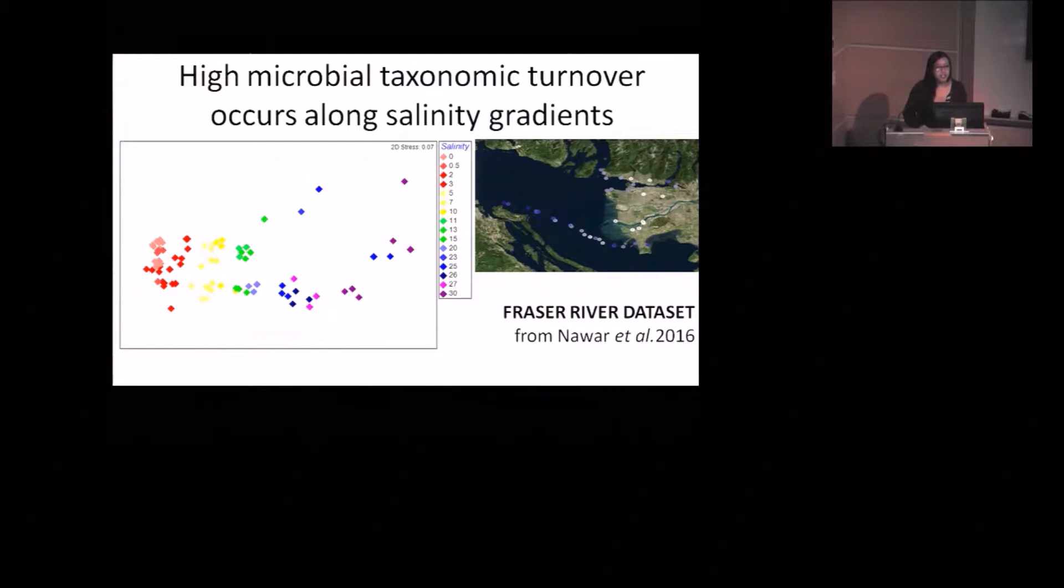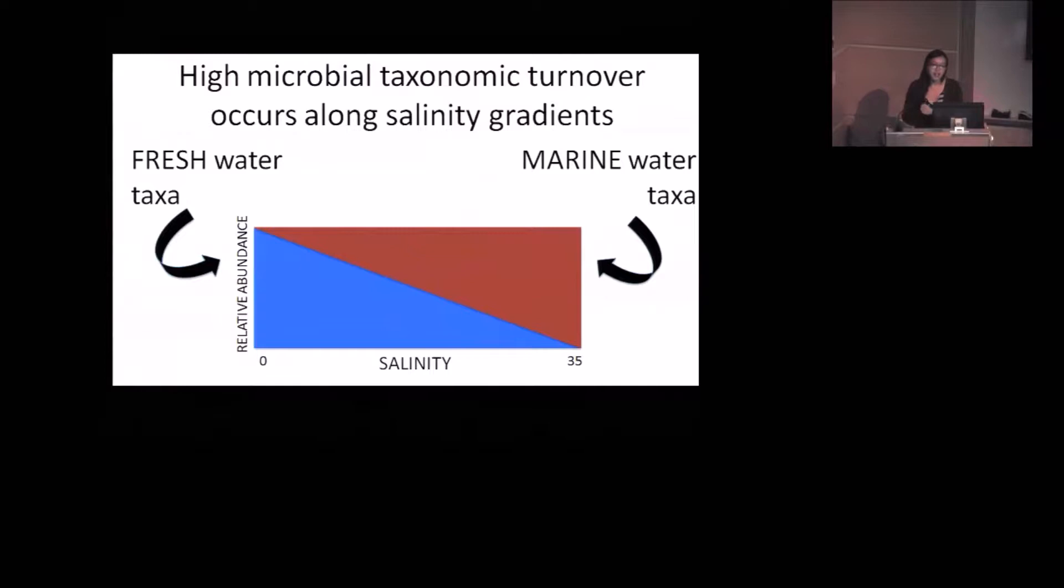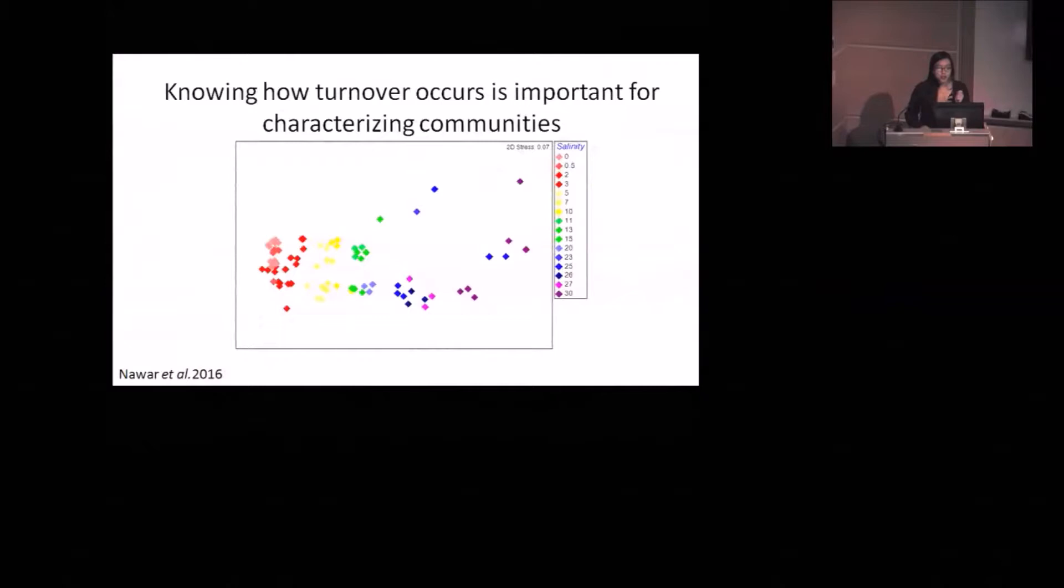We know that as you go from fresh to marine water, you see an abundance of freshwater specialists that gradually decrease as you increase salinity, and you gradually get more marine water specialists. But what we don't know a lot about is how turnover occurs along this gradient. Does it occur all at once, perhaps because there's some point that it becomes very difficult to osmoregulate? Or does it occur very gradually with each different species having a different point at which it can't survive anymore? So we wanted to ask this question.